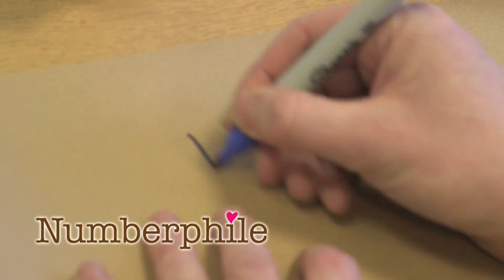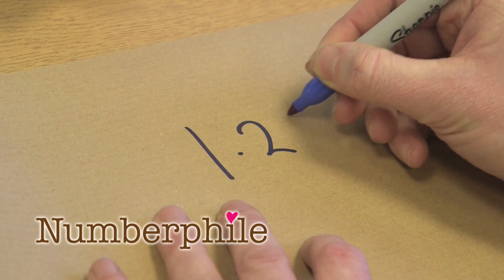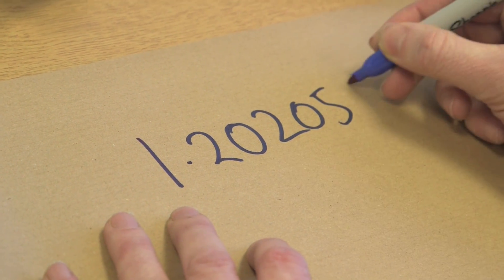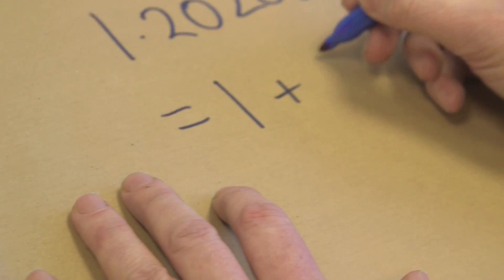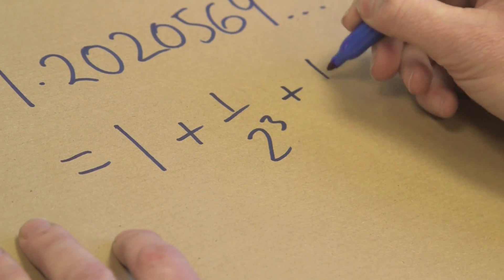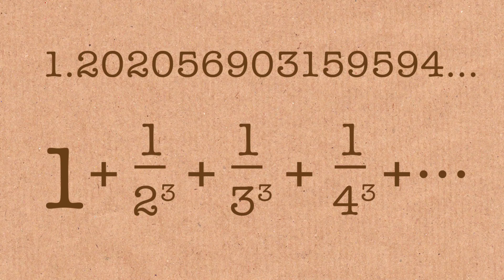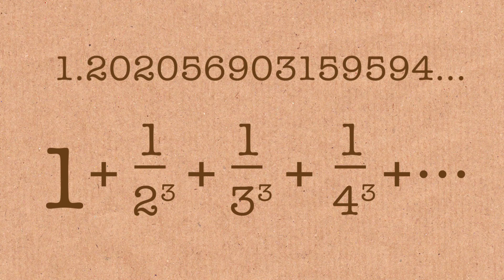I've got another constant for you Brady. It's Apéry's constant: 1.2020569, we could go on. What is this really? This is actually what I'm writing down here is really 1 plus 1 over 2 cubed plus 1 over 3 cubed. This sum actually appears in quantum electrodynamics. It's related to the anomalous magnetic moment of the electron, which is one of the great tests of QED. This number appears in that, so it has physical relevance, but that's not really why we're going to talk about it today.